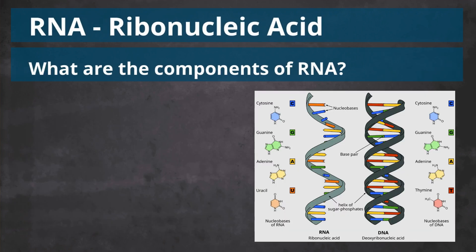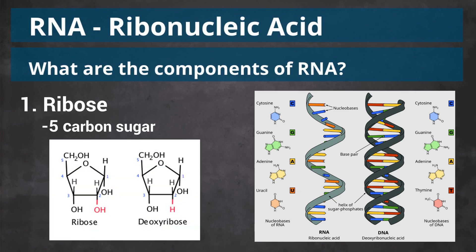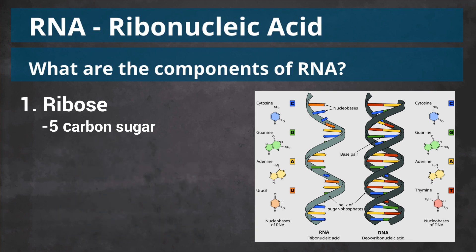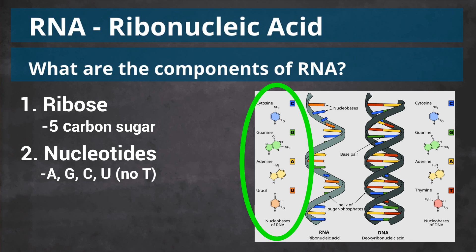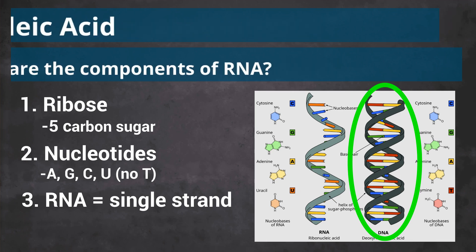RNA is short for ribonucleic acid, with ribo being short for ribose, the pentosugar that is chemically very similar to the deoxyribose found in DNA. Other ways that RNA differs from DNA is that it includes the nucleotides A, G, and C, just like DNA, but has uracil, or U, instead of the thymine that DNA has. RNA molecules are single-strand molecules, whereas DNA molecules have two strands, hence the term double helix.